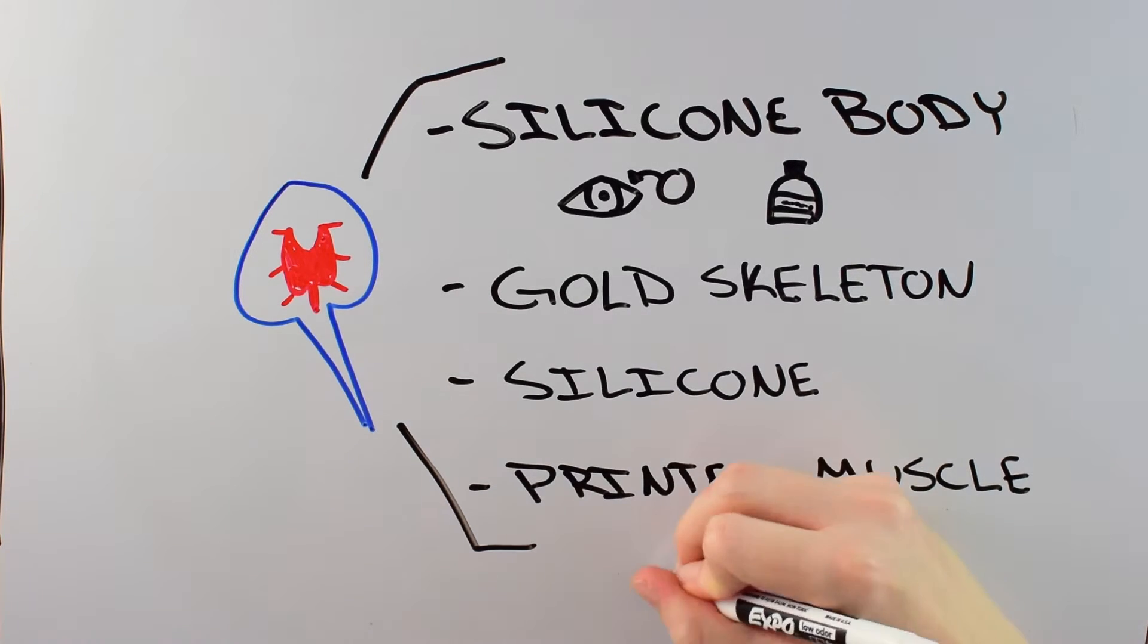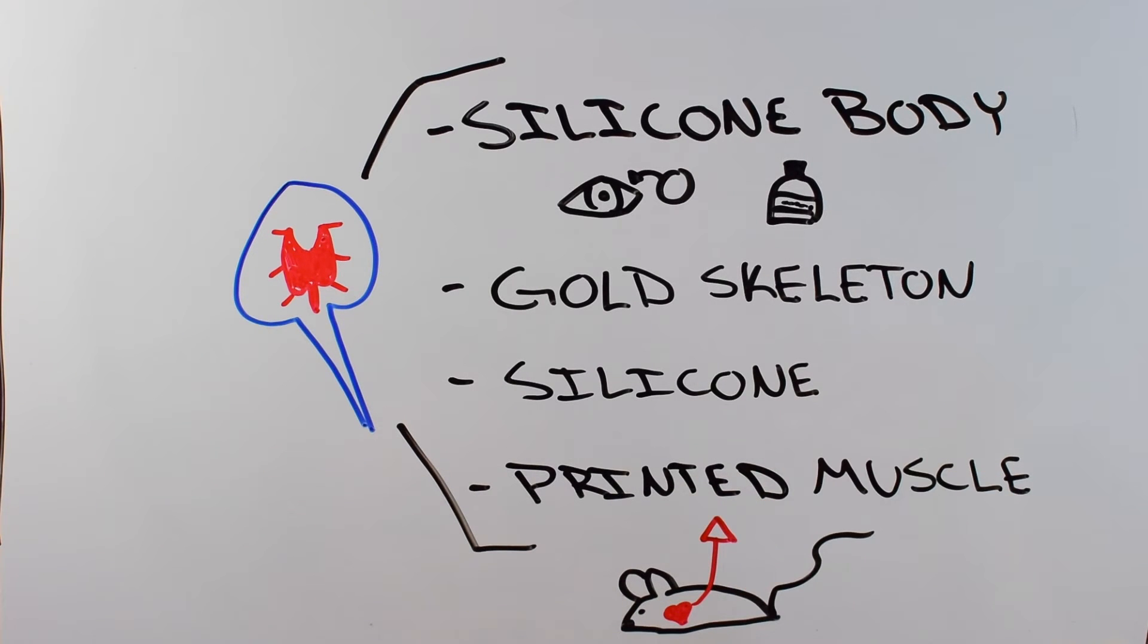And the cells of this muscle tissue are rat heart cells. These researchers were able to get away with one layer of printed muscle tissue instead of two, because they engineered the gold skeleton to spring back up after it was pulled down by the muscle tissue, kind of simulating the second layer of muscle without it actually having to be there. Making the overall design a lot more simplistic and a lot more likely to work.